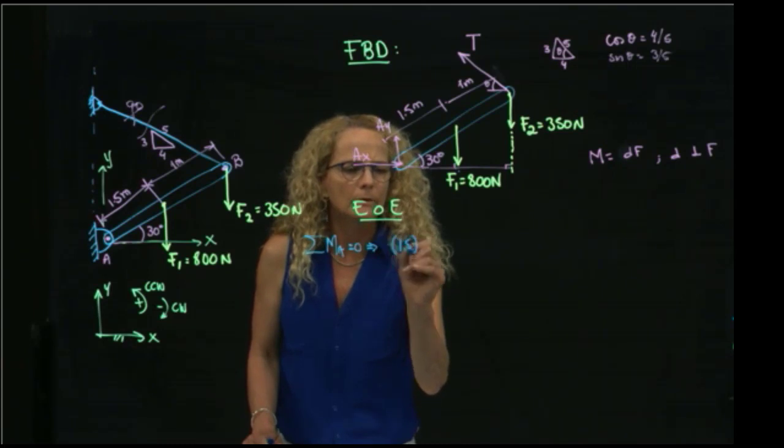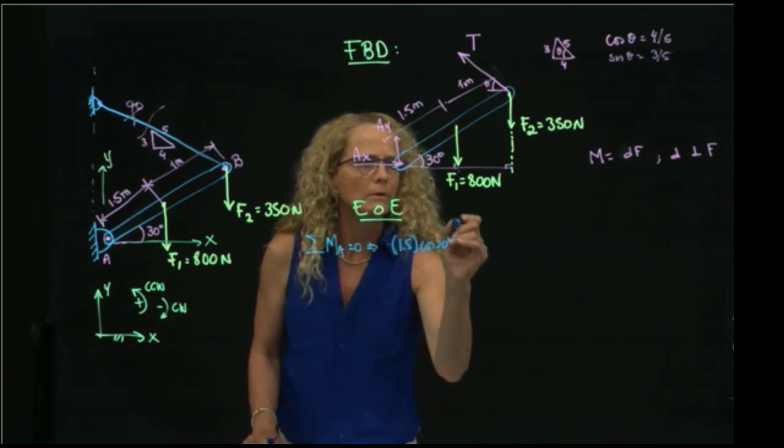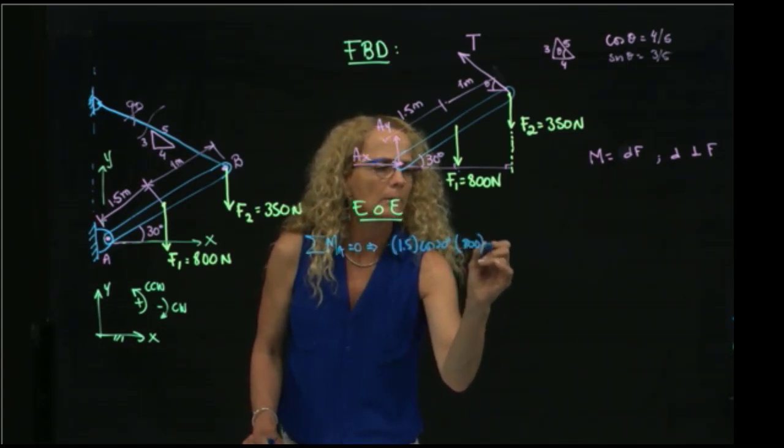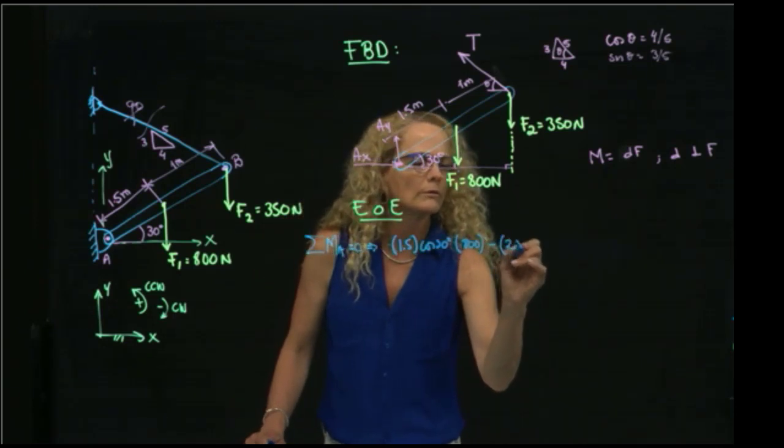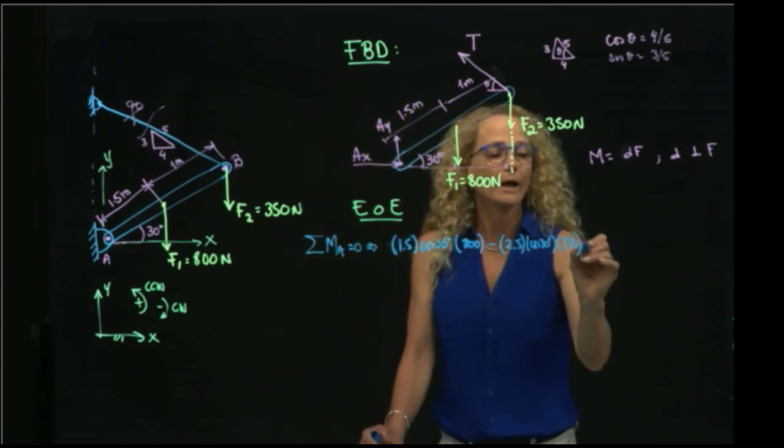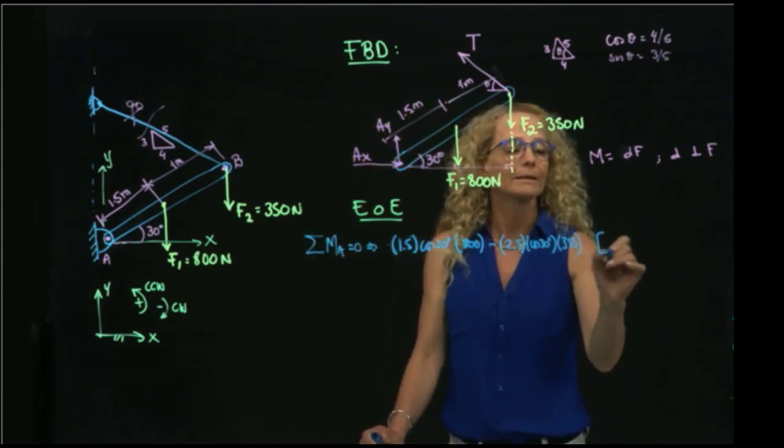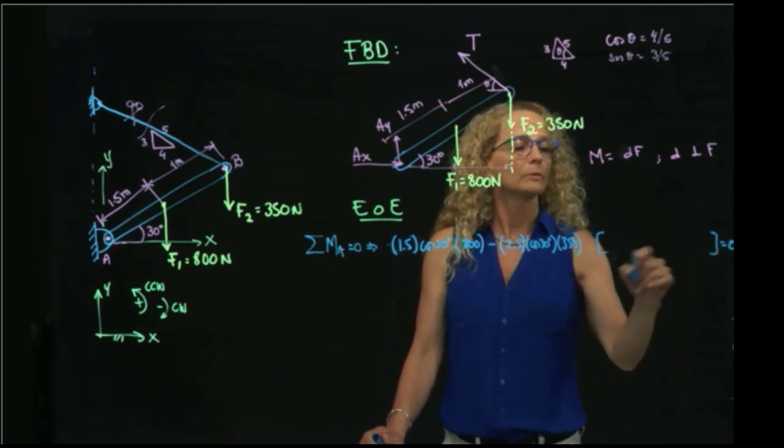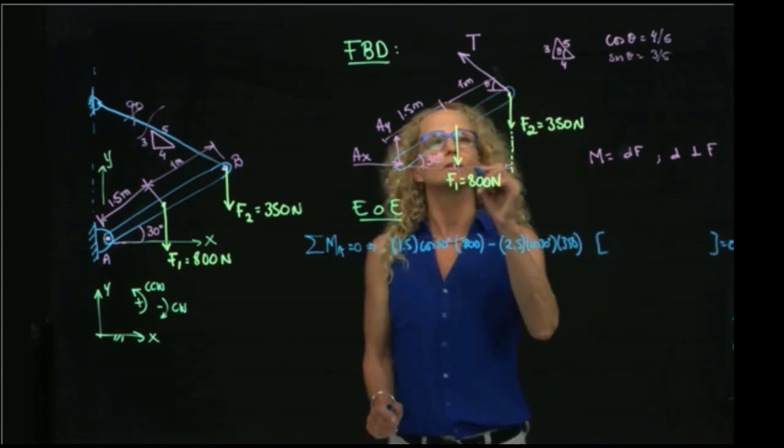1.5 cosine of 30, 800, minus 2.5 cosine of 30, 350. Okay, so now I have the moment produced by the tension.